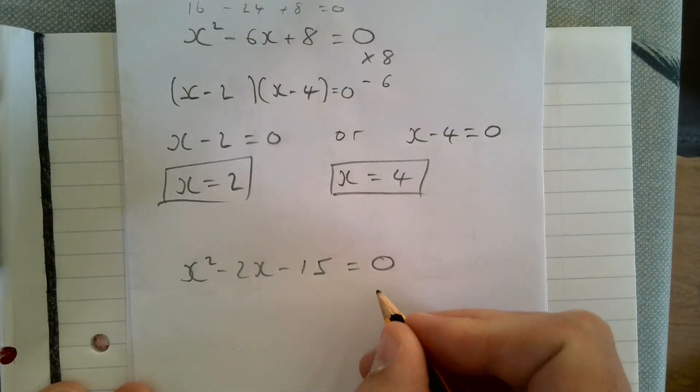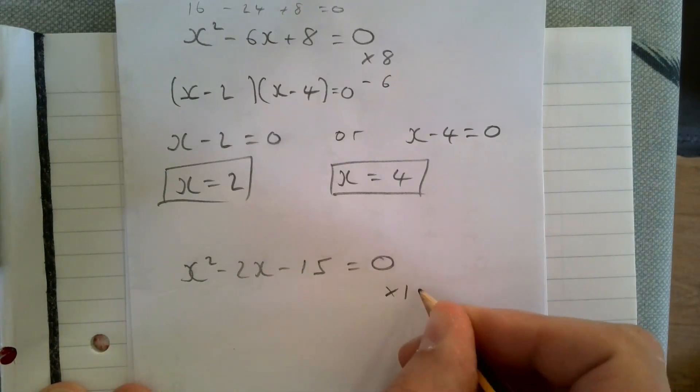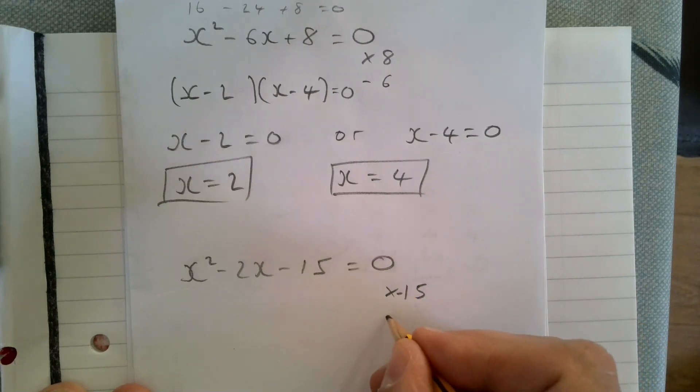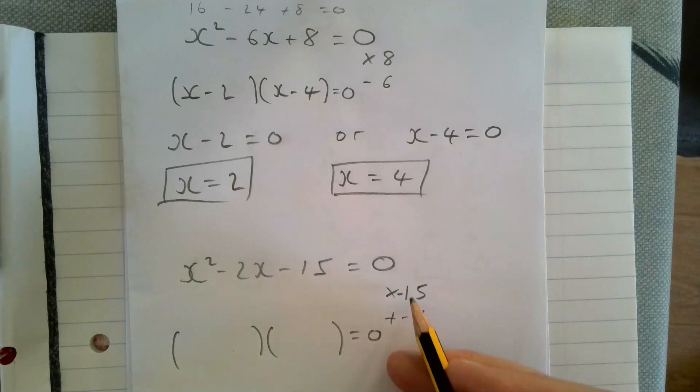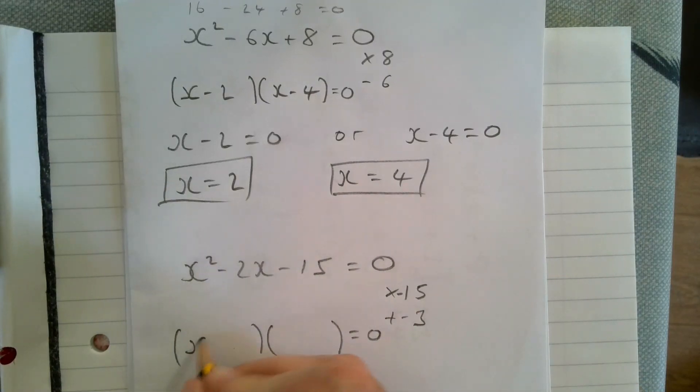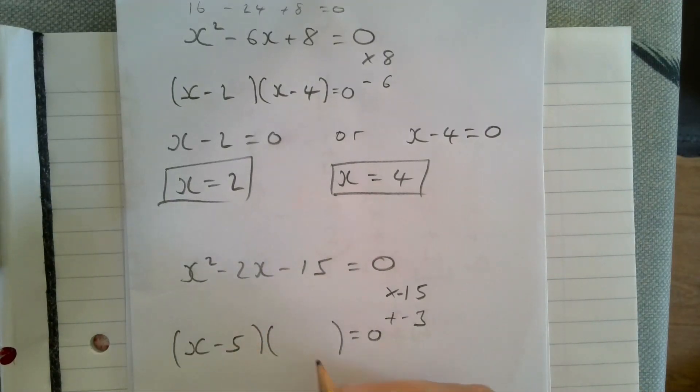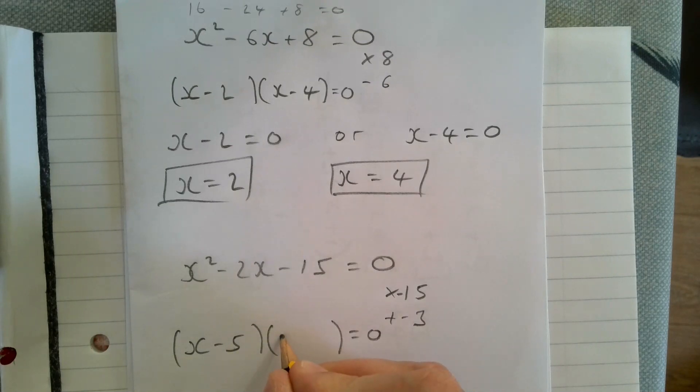A final example: x squared minus 2x minus 15 equals zero. We need two numbers that multiply together to give minus 15 and add to give minus two. If they multiply to give a negative, it must be a positive and a negative.